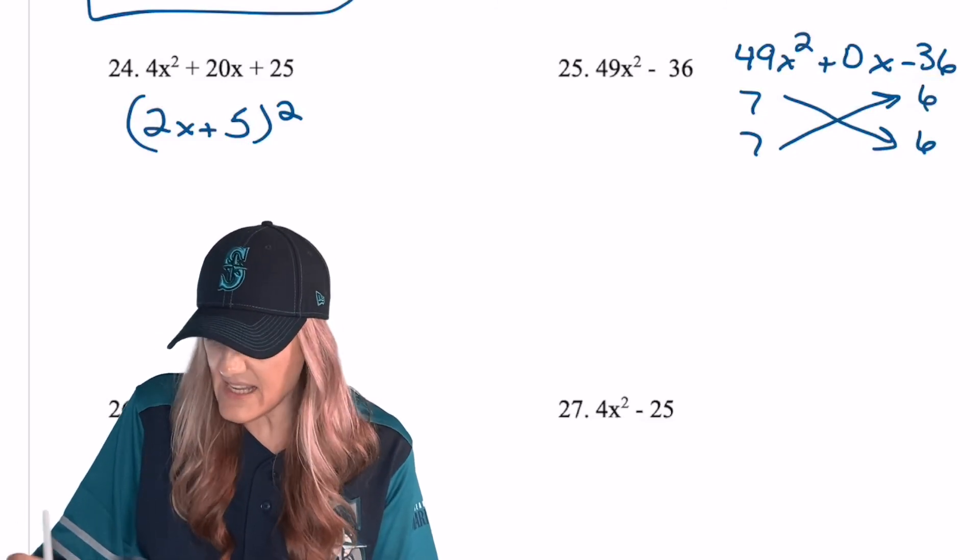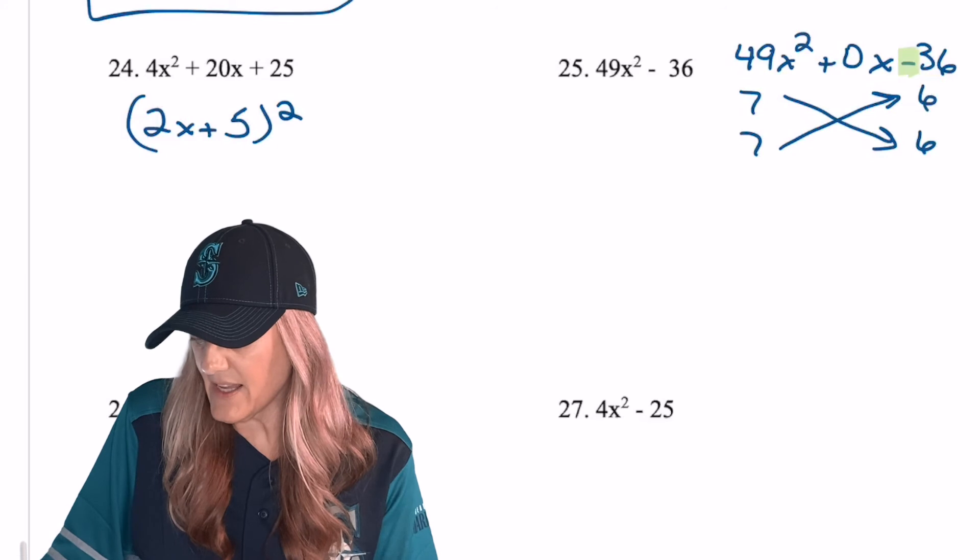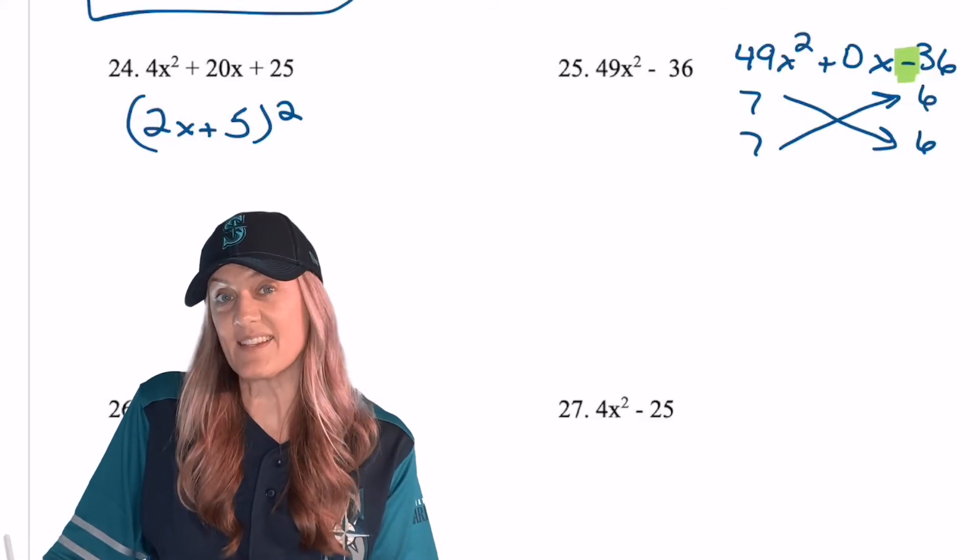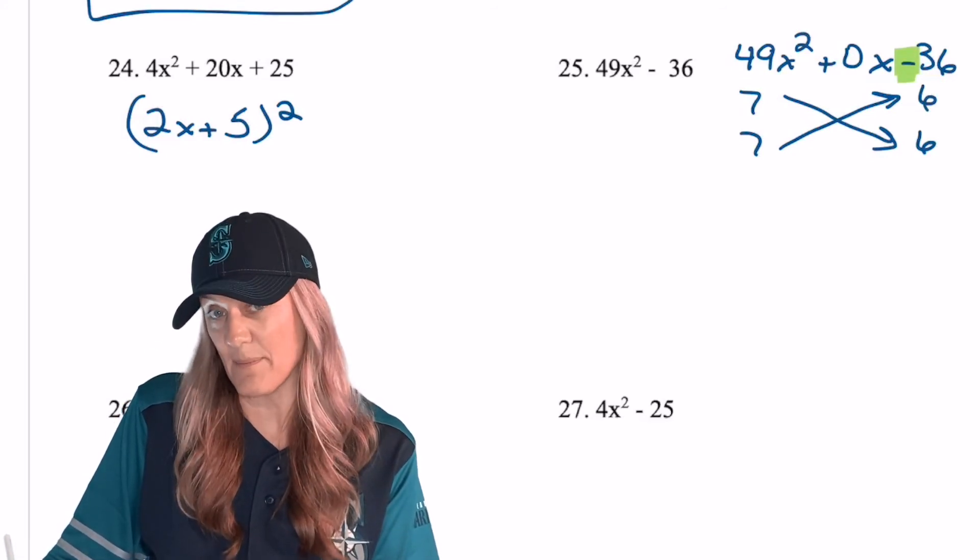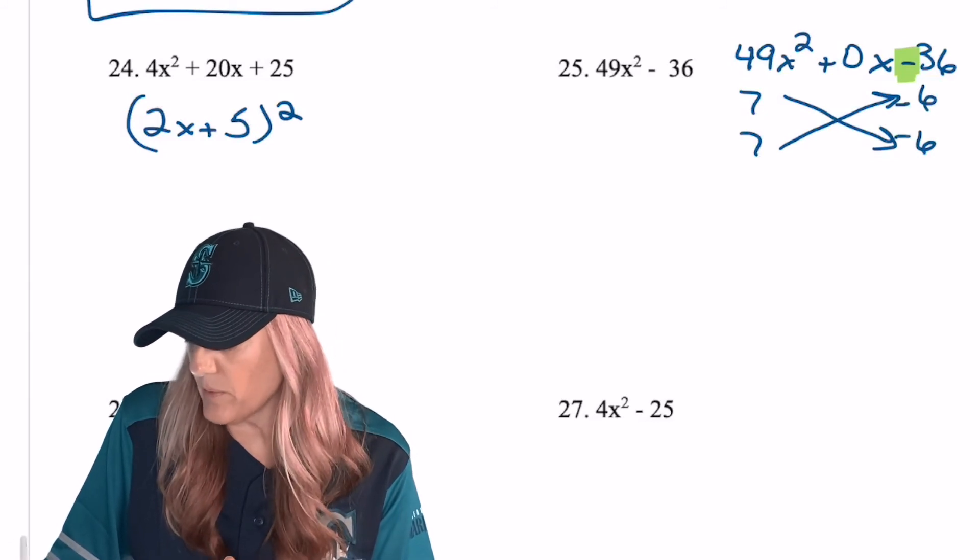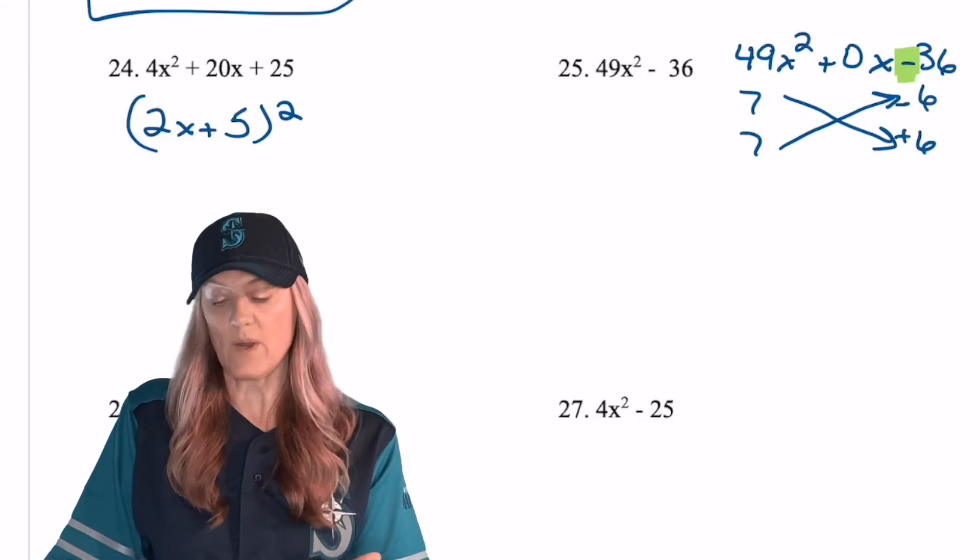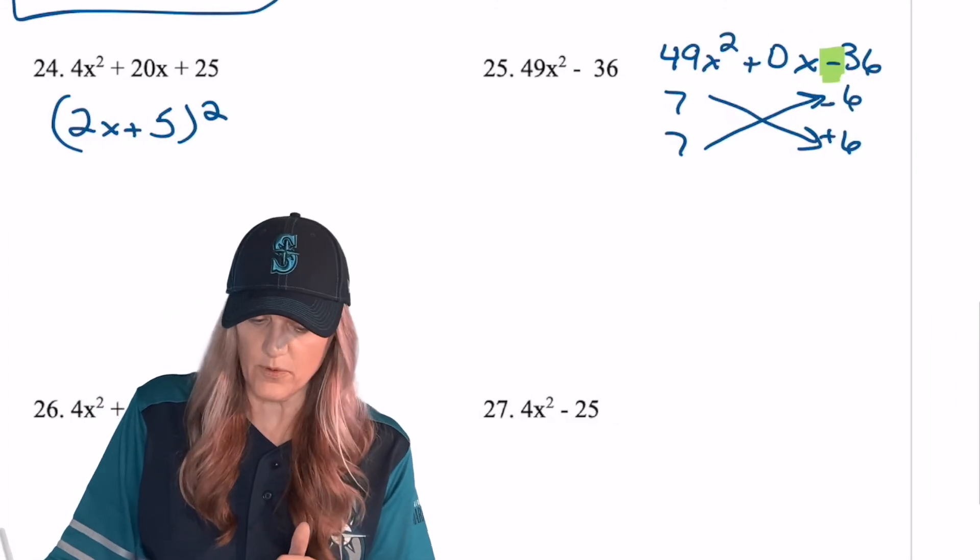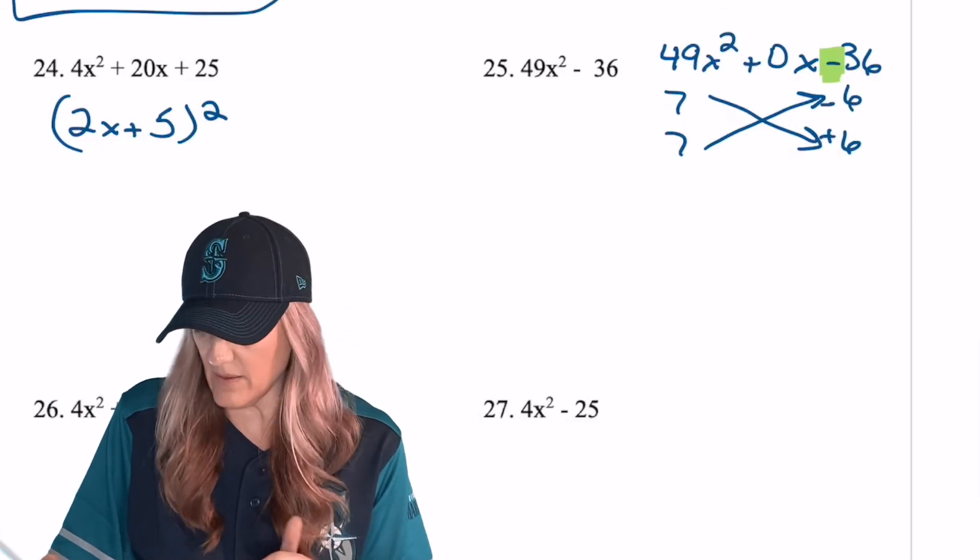But of course, the c value is negative. So what happens to my signs? 1 is a plus, 1 is a minus. Absolutely. So we'll go ahead and make one of them a plus, one of them a minus. Boom. We get that plus 42, minus 42. We get the 0x in the middle.